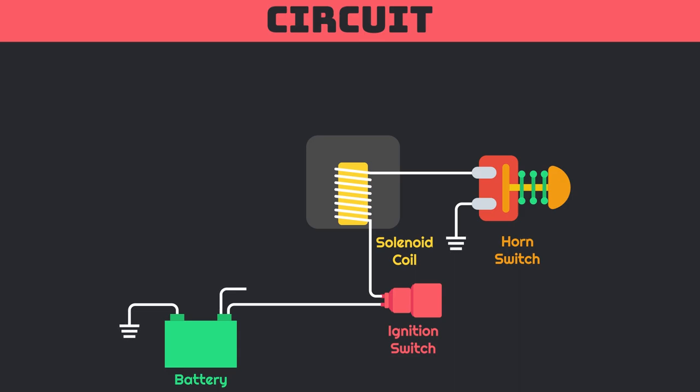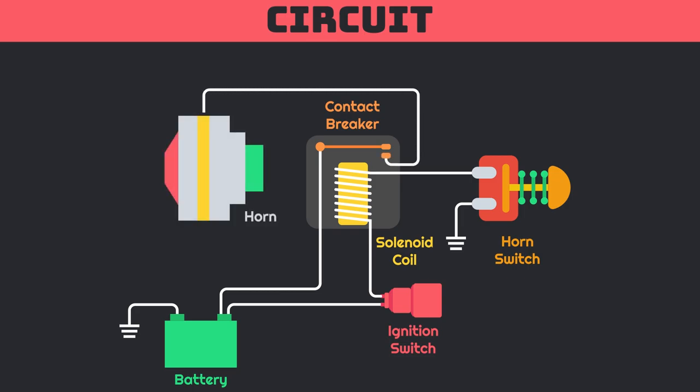One more connection from battery's positive terminal is connected to the contact breaker of the horn relay, while the other end of contact breaker is connected with the positive terminal of horn. To complete this entire high current circuit, the negative end of horn is grounded.